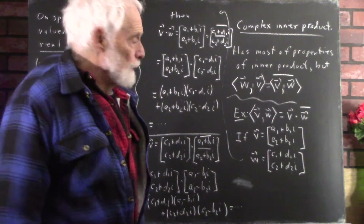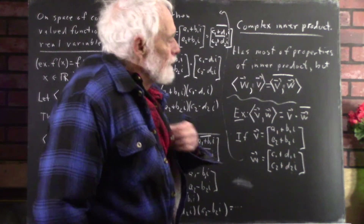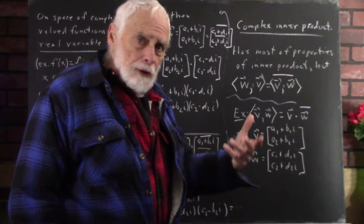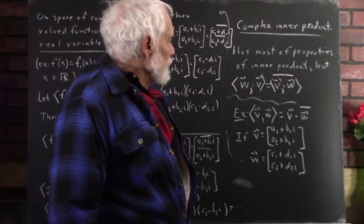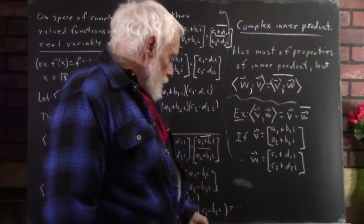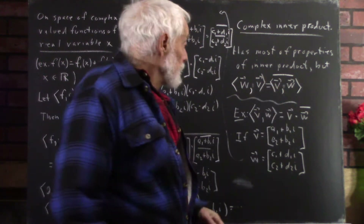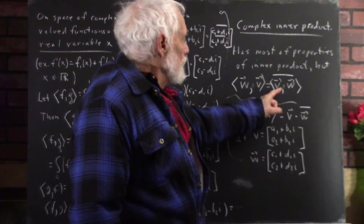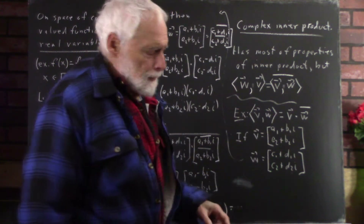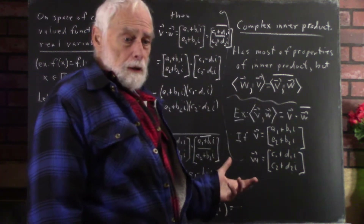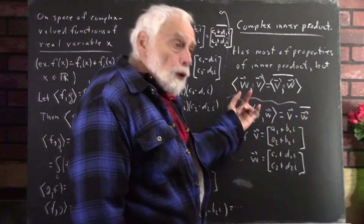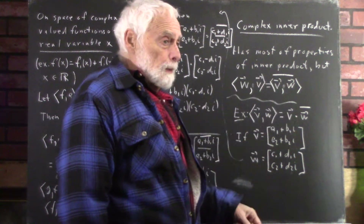We want to look at complex inner products. A complex inner product has most of the properties of regular inner products, with one exception: the inner product of W and V in complex space is the conjugate of the inner product of V and W. In other words, there is conjugate symmetry — if you reverse the order of W and V, you get the complex conjugate.